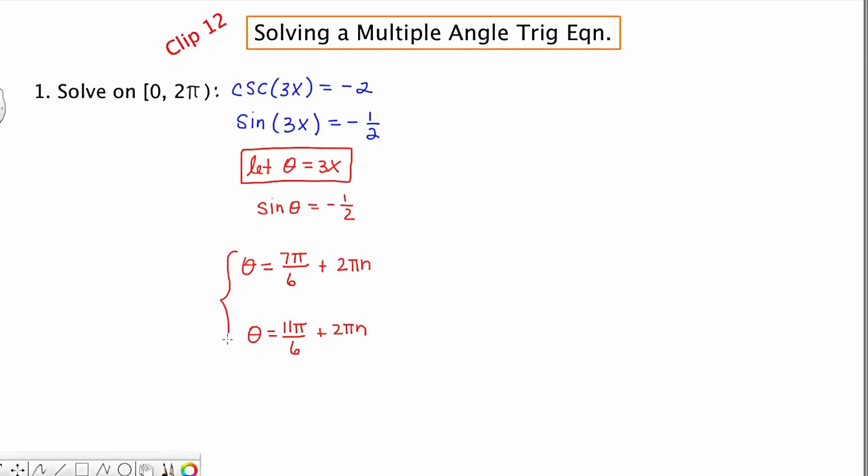Now, this collection of answers would be the solution if I were solving for theta, but my initial intent was to solve for x. So I go back to my legend, and I ask myself, well, how would I get this x by itself? To get it by itself, I'd have to divide by 3. So in order to get x by itself, I need to divide everything through by 3.